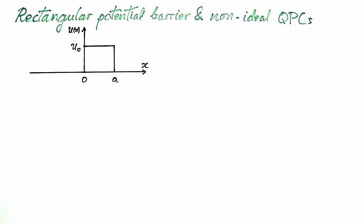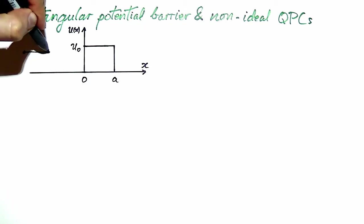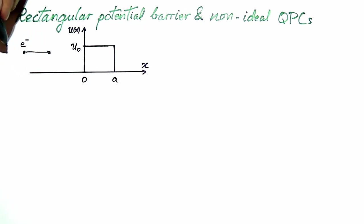We consider the following quantum mechanical problem. We have an electron of energy E moving from left to right towards the potential barrier of height U0 and width a.